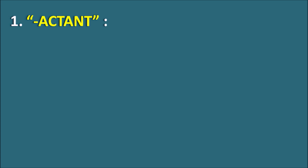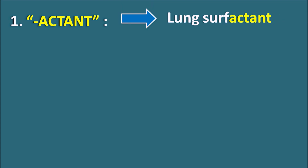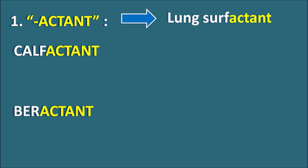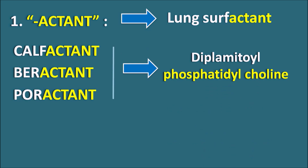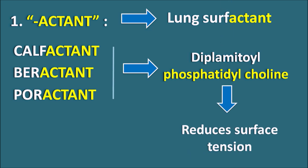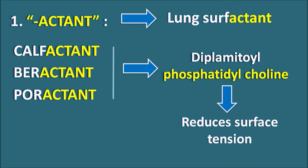First one is the suffix -actant. This suffix indicates they are lung surfactants. We have drugs like calfactant, which is a lung surfactant extracted from the calf lungs. Similarly synthetic lung surfactants like baractant and poractant all have the suffix -actant. These drugs have a mixture of phosphoproteins, and one of the important components is dipalmitoyl phosphatidylcholine, which acts like a lung surfactant and reduces the surface tension within the alveolar cells.